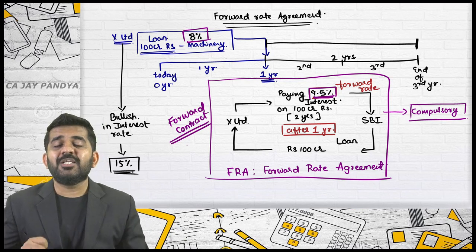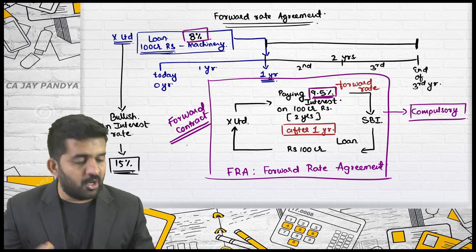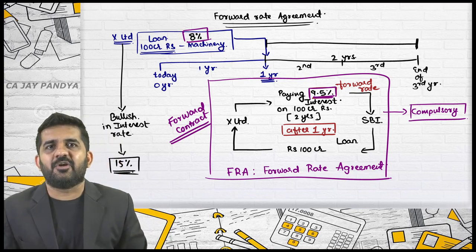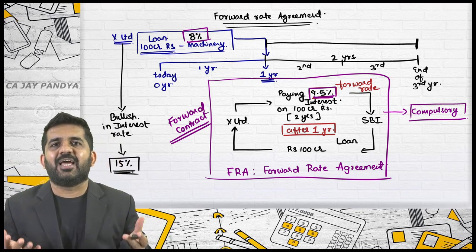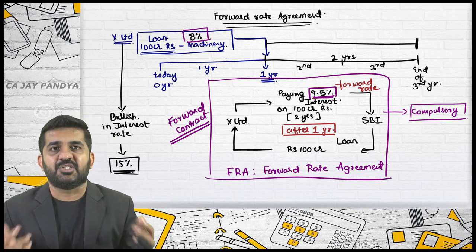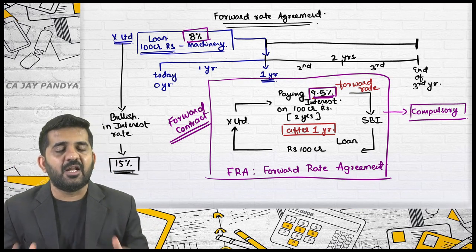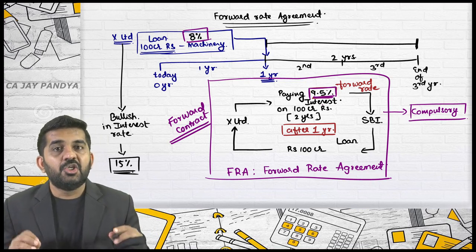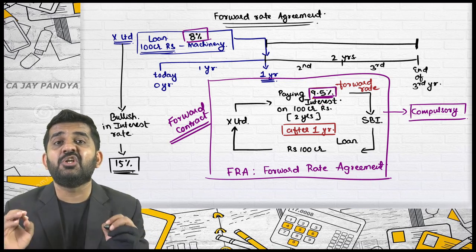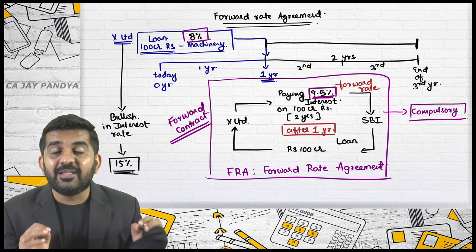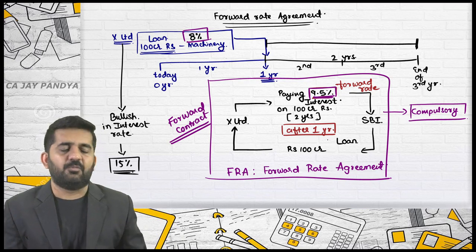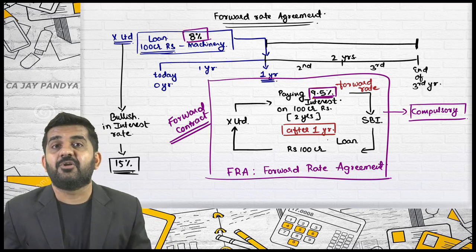What is the difference between a forward contract and this contract? In a forward contract, the underlying asset is potatoes, Reliance, Nifty, or Sensex. Here, the underlying asset is interest rate. There will always be a loan contract involved and the underlying asset will be interest rate.